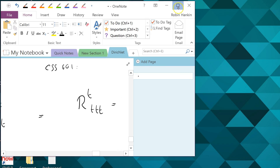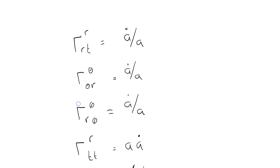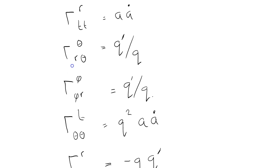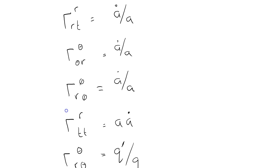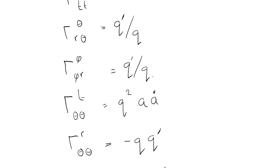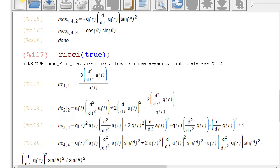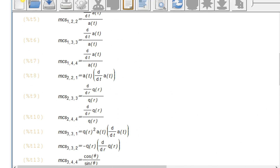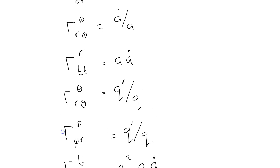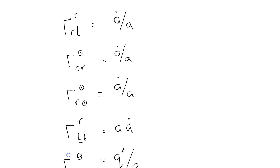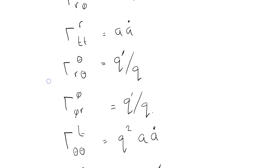I've got a list here of all the non-zero Christoffel symbols of the second kind - all the non-zero ones that Maxima gave me if I scroll back up to this calculation here. And all I've done is just gone through them one by one and copied them out in a more civilised and human-type notation. So we've got quite a few of these.